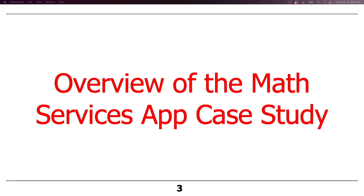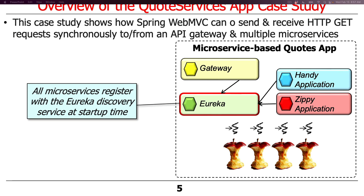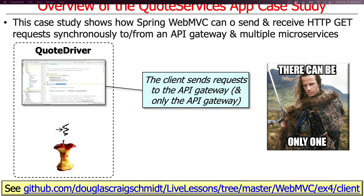The client will send GET requests, which are received by the gateway, which then forwards things to the appropriate microservice, which does the work and sends the response back to the client. We're going to have a single run script that launches all microservices in the right order, starting with the Eureka Discovery Service. Then as the other microservices start up — the gateway, the Handy application, the Zippy application — they will register themselves with the Eureka Discovery Service. The client then sends requests only to the API Gateway; there's no communication from the client to any other microservice.